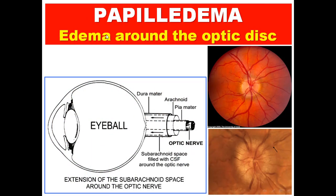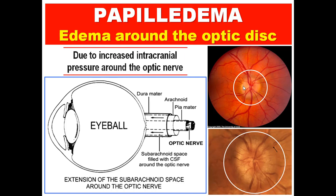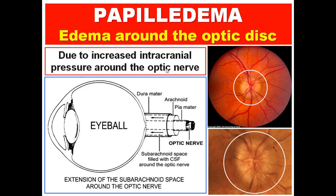The third clinical case is papilledema, or edema around the optic disc. The optic nerve is surrounded by meninges — pia, arachnoid, and dura — so it is surrounded by cerebrospinal fluid. Increased CSF pressure compresses the optic nerve, causing papilledema, which may lead to blindness. Thank you very much. Good luck and best wishes.